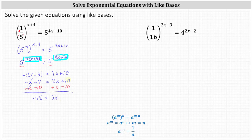Ten minus ten is zero. For the last step, we divide both sides by five. Simplifying, our solution is x equals negative fourteen-fifths.